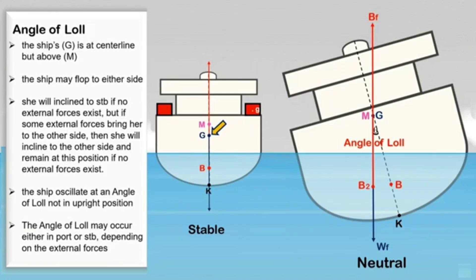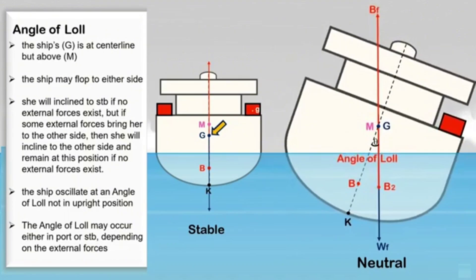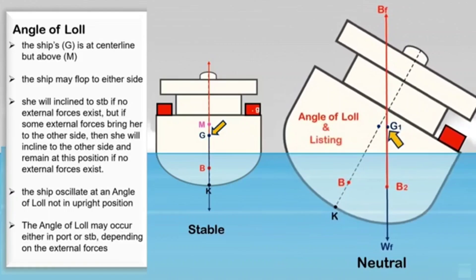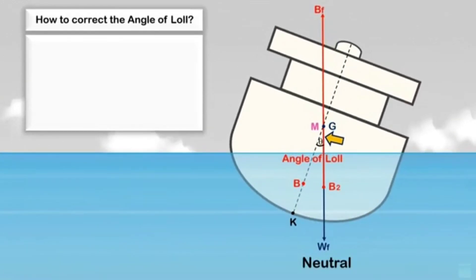For the angle of loll, adding weight on the high side will worsen the situation. If weight is added to the high side and the ship heels to the other side, the new position of the ship's center of gravity will be off the centerline, causing the ship to heel further. Now there are two serious problems: the angle of loll still exists and at the same time the ship's center of gravity is off the centerline.